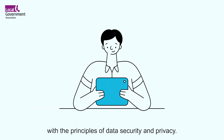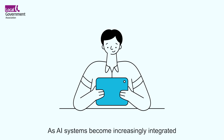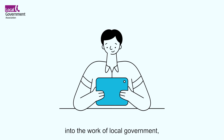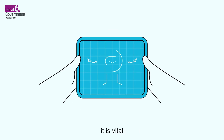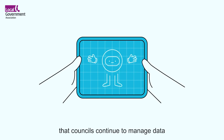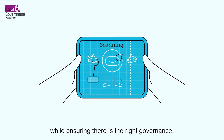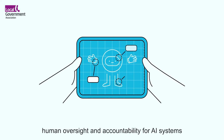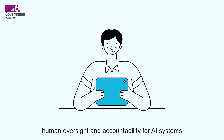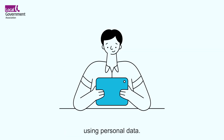Familiarise yourself with the principles of data security and privacy. As AI systems become increasingly integrated into the work of local government, it is vital that councils continue to manage data safely and responsibly, while ensuring there is the right governance, human oversight and accountability for AI systems using personal data.